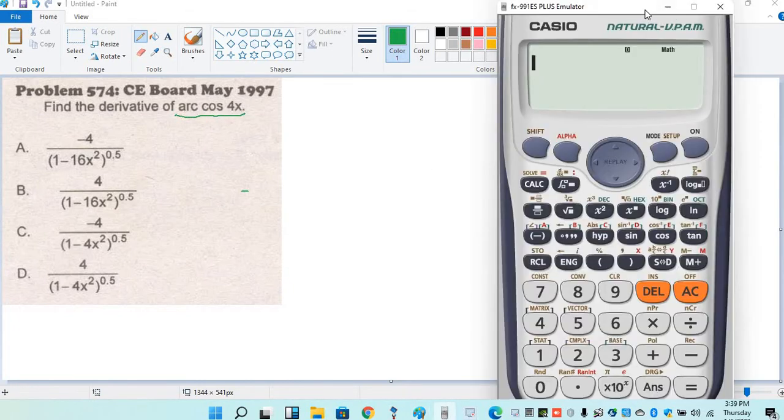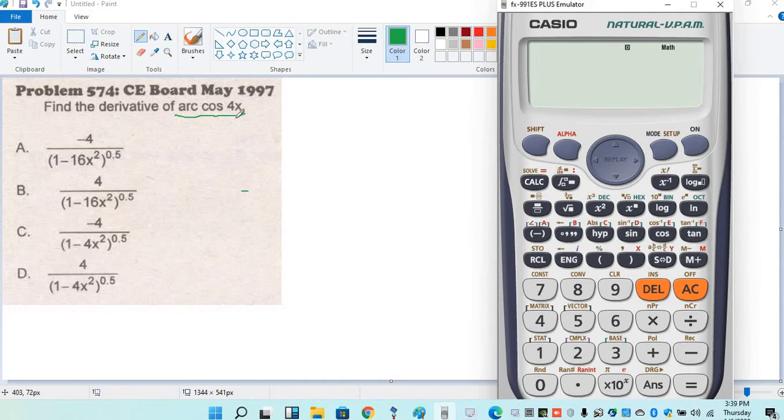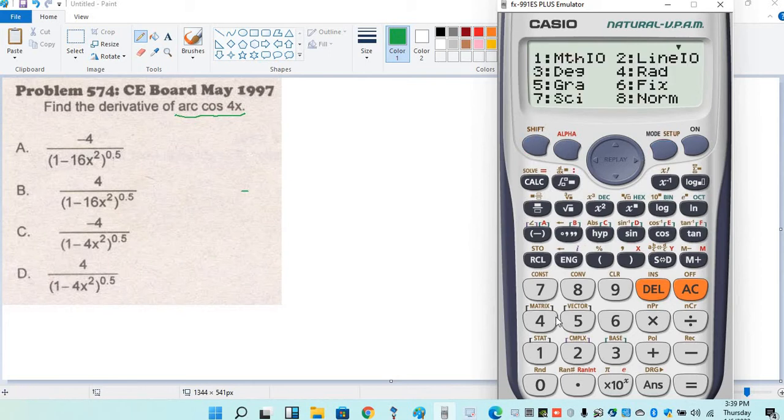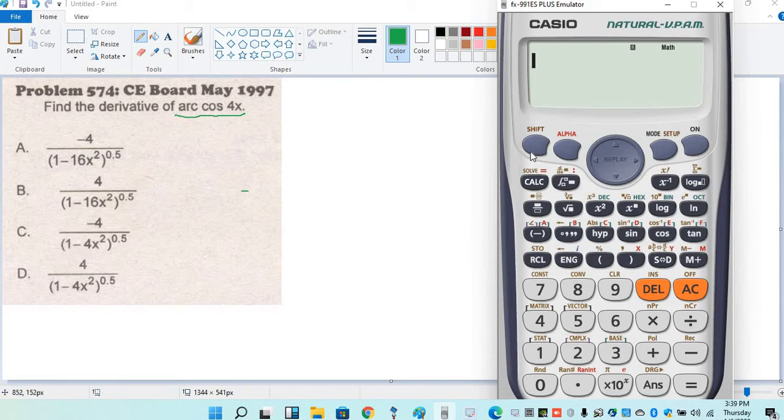Since it is a trigonometric function, the calculator must be in radian mode. Shift mode number 4, shift integral. The trigonometric function arccos is shift cos 4x.